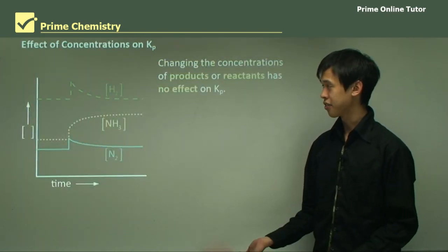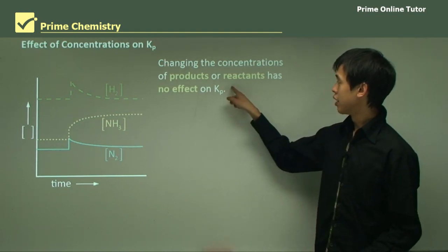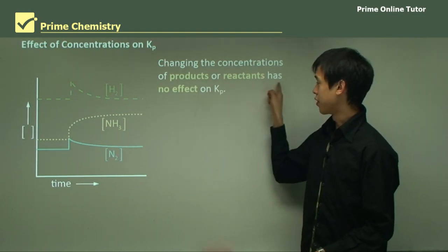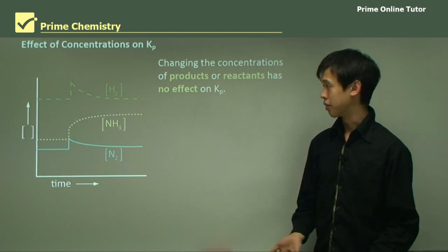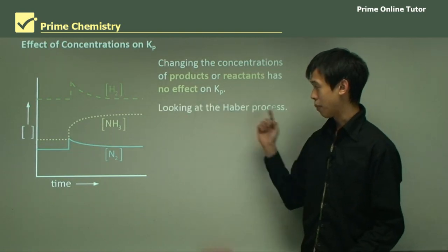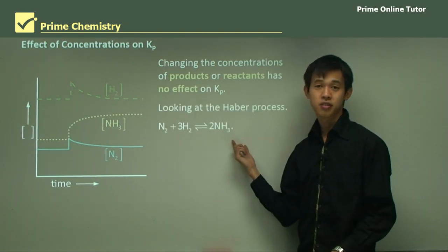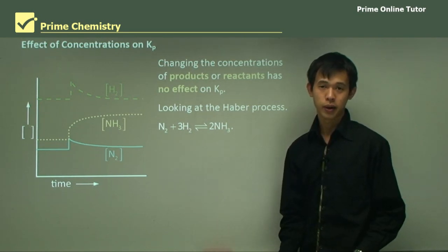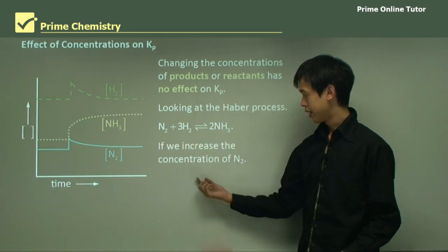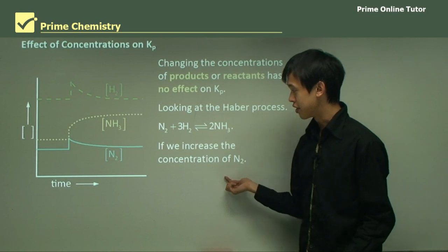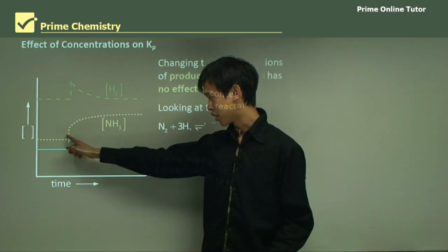So let's look at concentrations first. Changing the concentration of products or reactants has no effect on Kp, as we mentioned. Let's look at the Haber process with this reaction, which we should be well familiar with by now. Now, if we increase the concentration of N2, so from this diagram you can see there's a sharp increase here.